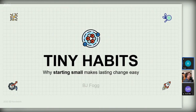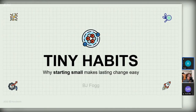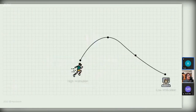BJ Fogg used to teach a class at Stanford called the Facebook class, in which he taught students how to make apps addictive. What he does with this book is use the same principles of behavior design and apply them to changing our own behavior and how we can create new habits. I'm going to try and keep this as simple and straightforward as possible because the book gets a little technical in some places. If at any point anyone has any questions, feel free to stop me and ask.